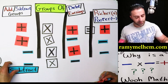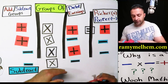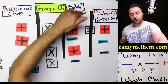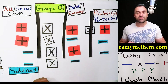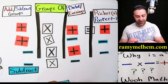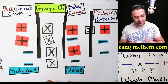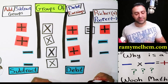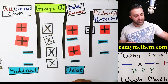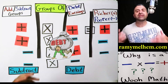Subtract groups of? Groups of what — debt or earnings? Debt. So you're subtracting debt. What happens if you subtract debt? Go up to this debt guy.